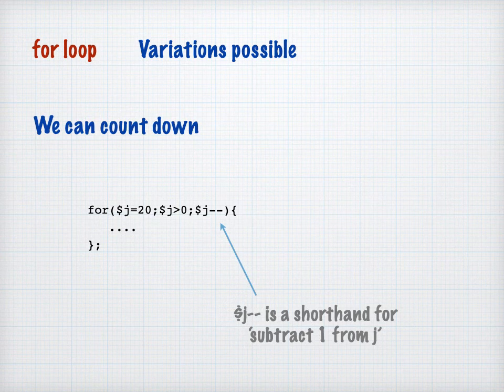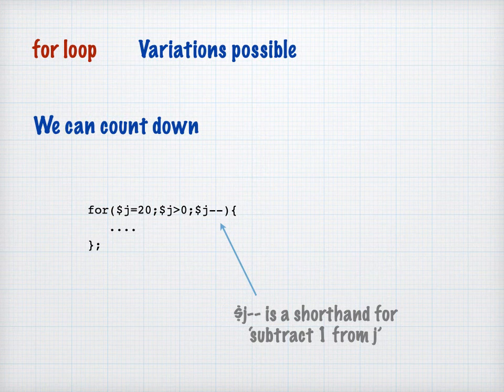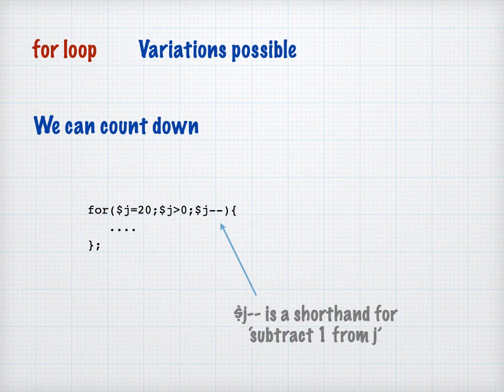The other variation that we could have is one where instead of counting up, we count down. So have a look at these values. I'm going to have a counter in this instance, it's going to be called J, and J is going to have an initial value of not zero or one, but it's actually going to have an initial value of 20.